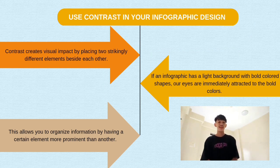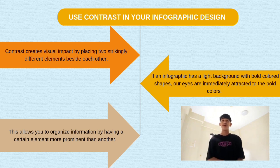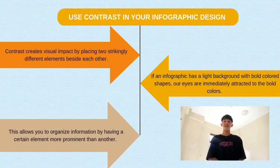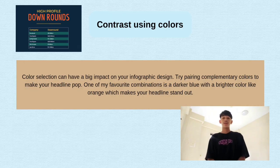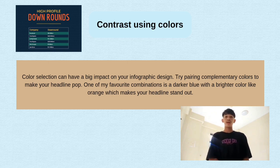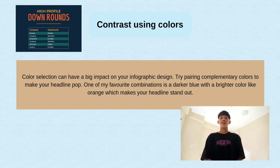Good day sir, I am Neljan Ruyo from BSHM1C. Use contrast in your infographic design. Contrast creates visual impact by placing two strikingly different elements beside each other. If an infographic has a light background with a bold color or shape, eyes are immediately attracted to the bold color. This allows you to organize information by having certain elements more prominent than others. Contrast using color: color selection can have a big impact on your infographic design. Try pairing complementary colors to make a headline pop. One favorite combination is a darker blue with a bright color like orange, which makes your headline stand out.